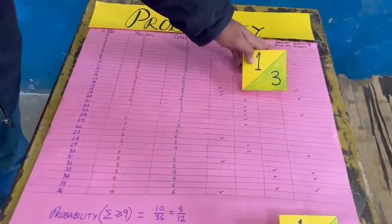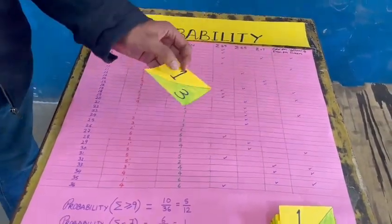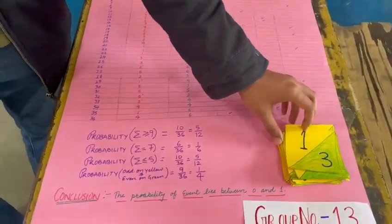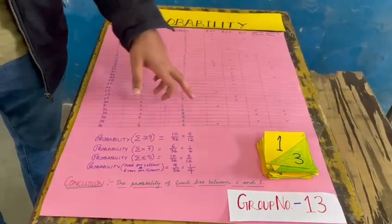And the last thing we have taken is odd on yellow and even on green. So this is odd for both, so this is also not a favorable outcome. And by this process, repeating it for 36 times, we have recorded all the observations.